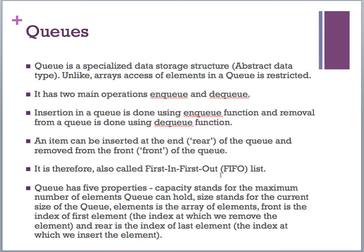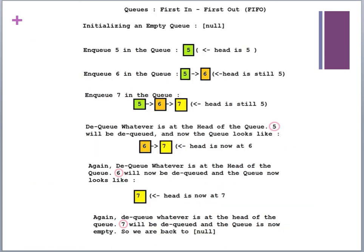The queue operates similarly to a stack in that we have individual elements, but we take from the front and add to the rear instead of both operations happening at the same end. Property-wise it has a capacity, a current size, the individual elements, and importantly two pointers — one for the front and one for the rear. With an array implementation, the front is always index zero and the rear index changes as we add elements. Just like the stack, we can implement this with an array or a linked list.